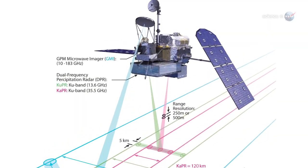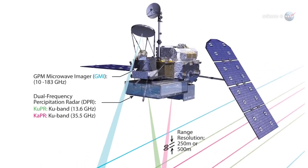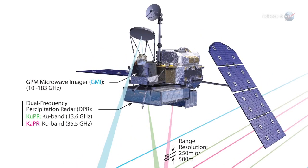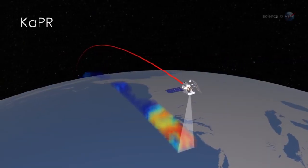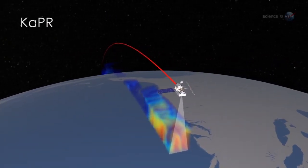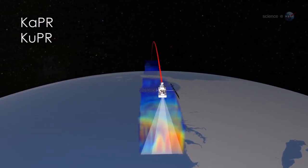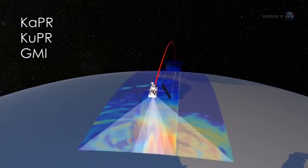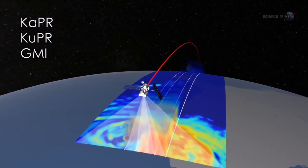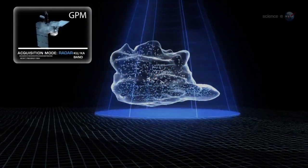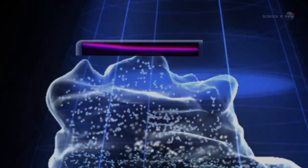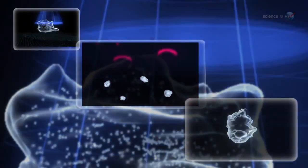GPM carries two instruments to measure rain and snowfall—the dual-frequency precipitation radar and the GPM Microwave Imager. Compared to instruments flown on previous Earth science satellites, GPM's Precipitation Radar and Microwave Imager can see deeper into clouds and detect smaller particles of rain, ice, and snow. The radar will be able to form 3D profiles of precipitation, revealing the inner workings of cloudy storm systems.